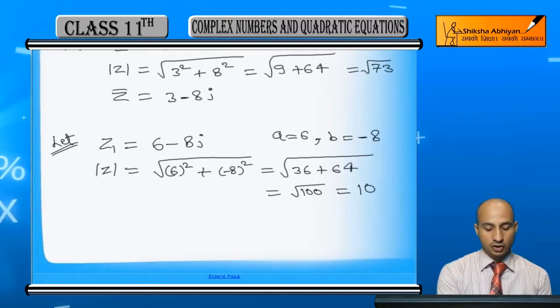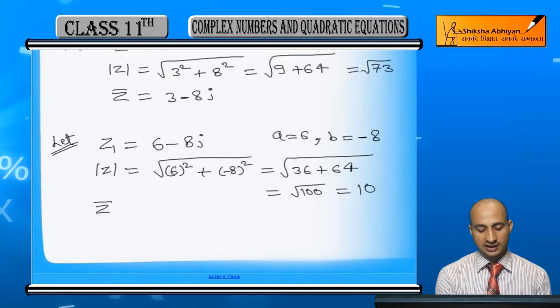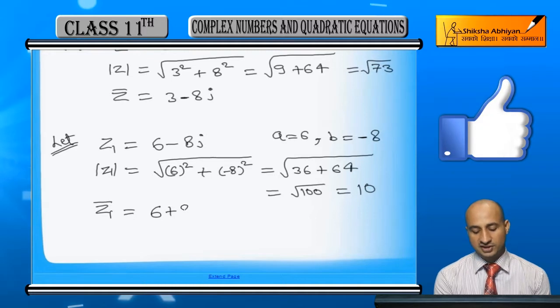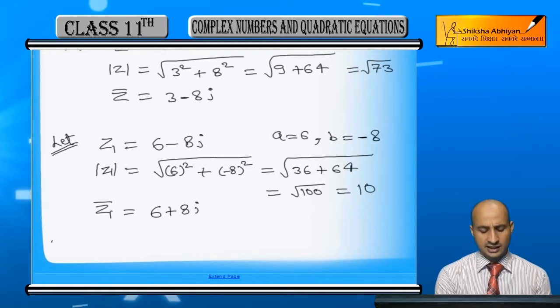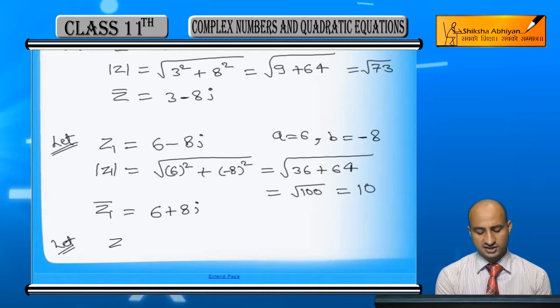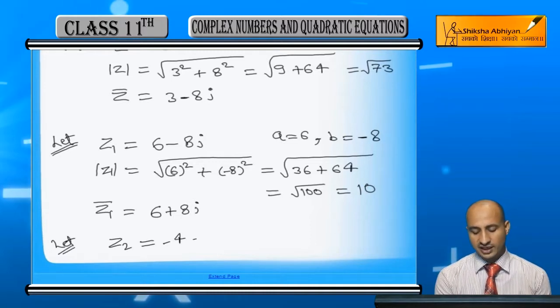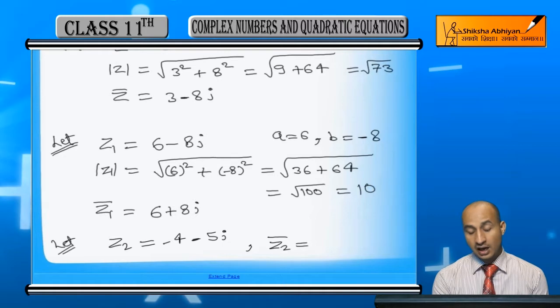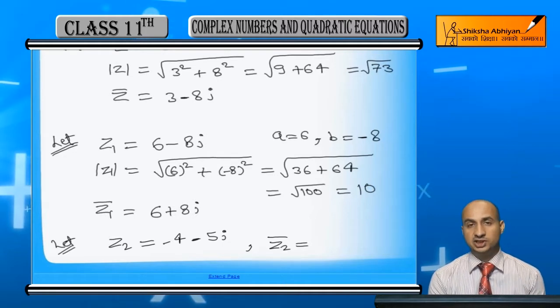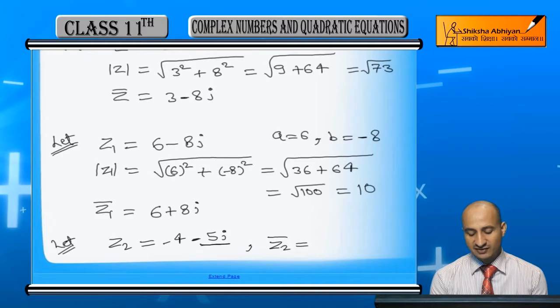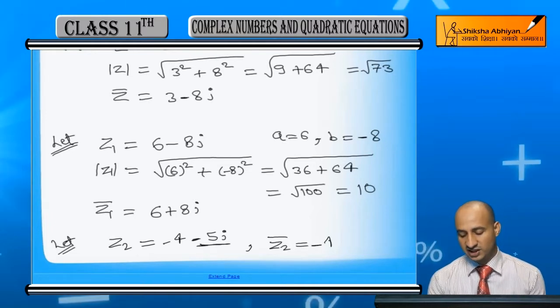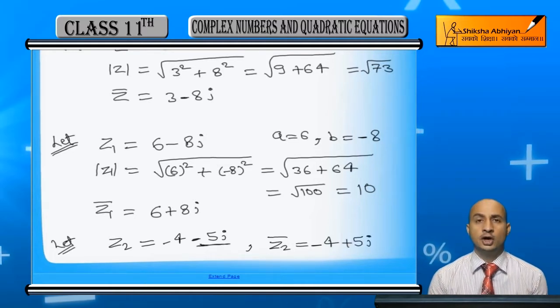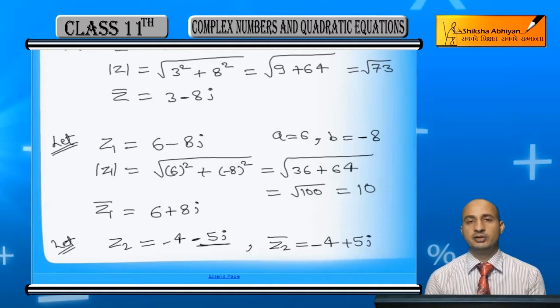Now if we take the conjugate of Z1, we have Z1 = 6 - 8i. The sign here is minus, so in the conjugate we make it plus. The conjugate Z1̄ = 6 + 8i. Similarly, if we have another complex number Z2 = -4 - 5i, the conjugate of Z2 will be -4 + 5i. The real part remains minus 4, and the imaginary part sign changes from minus to plus.